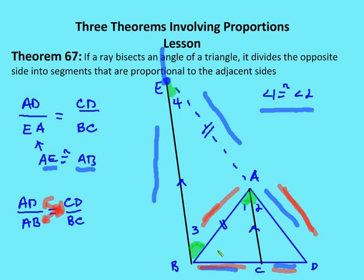There's a relationship between the opposite side, which is divided, and the adjacent sides of the triangle. BC is to AB as CD is to AD, or AB is to AD as BC is to CD. That is the Angle Bisector Theorem proven.